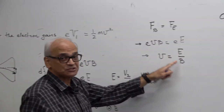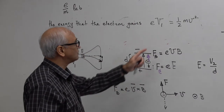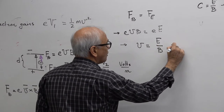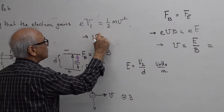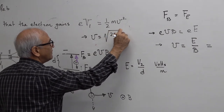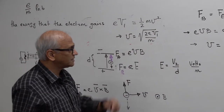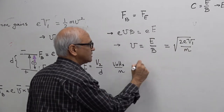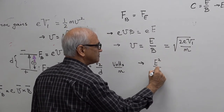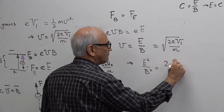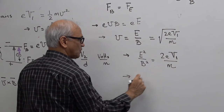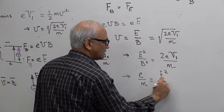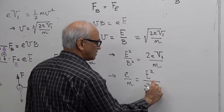From Maxwell's equations you can show that for light, C equals E over B. But we're not dealing with that — we're talking about electron particles, not electromagnetic waves. Here V equals E over B. And if I know that velocity with respect to the electron mass and charge, I can figure out what E over M should be. Solving from the energy equation, V squared equals 2EV1 over M. Substituting and squaring both sides: E squared over B squared equals 2EV1 over M, so E over M equals E squared over 2V1 B squared.